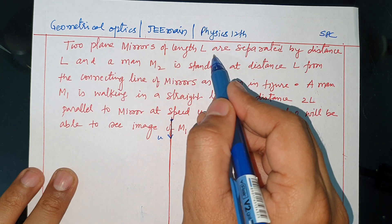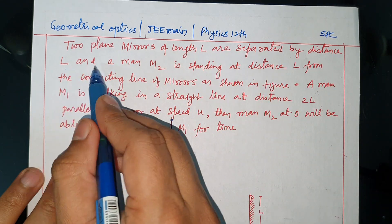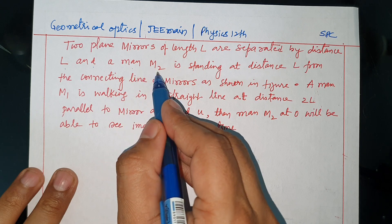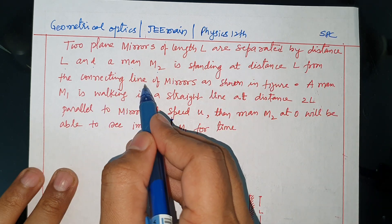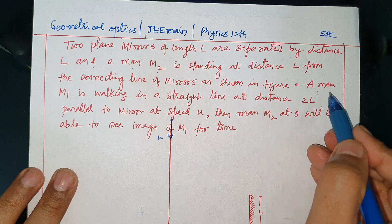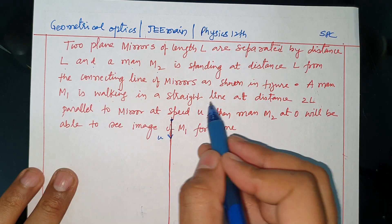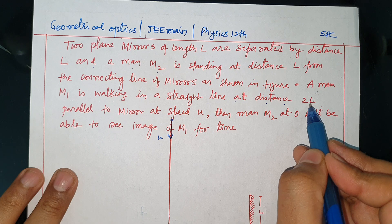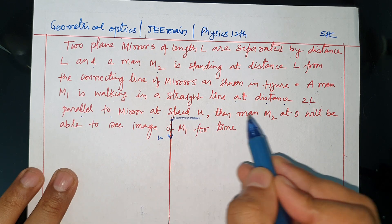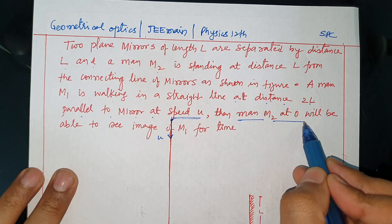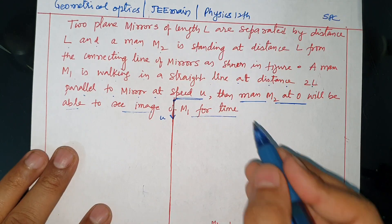Two plane mirrors of length L are separated by a distance L, and a man M2 is standing at a distance L from the connecting line of the mirrors as shown in the figure. A man M1 is walking in a straight line at a distance 2L, parallel to the mirror at speed U. The man M2 at O will be able to see the image of M1 for a time — we need to find this time.